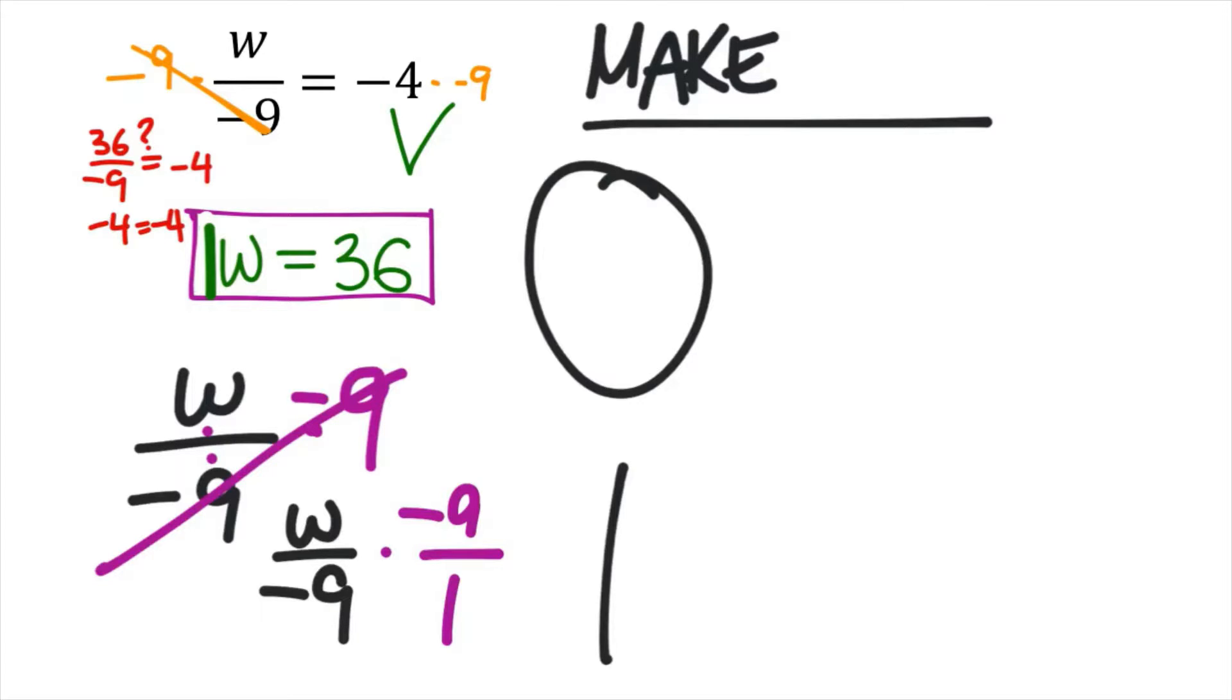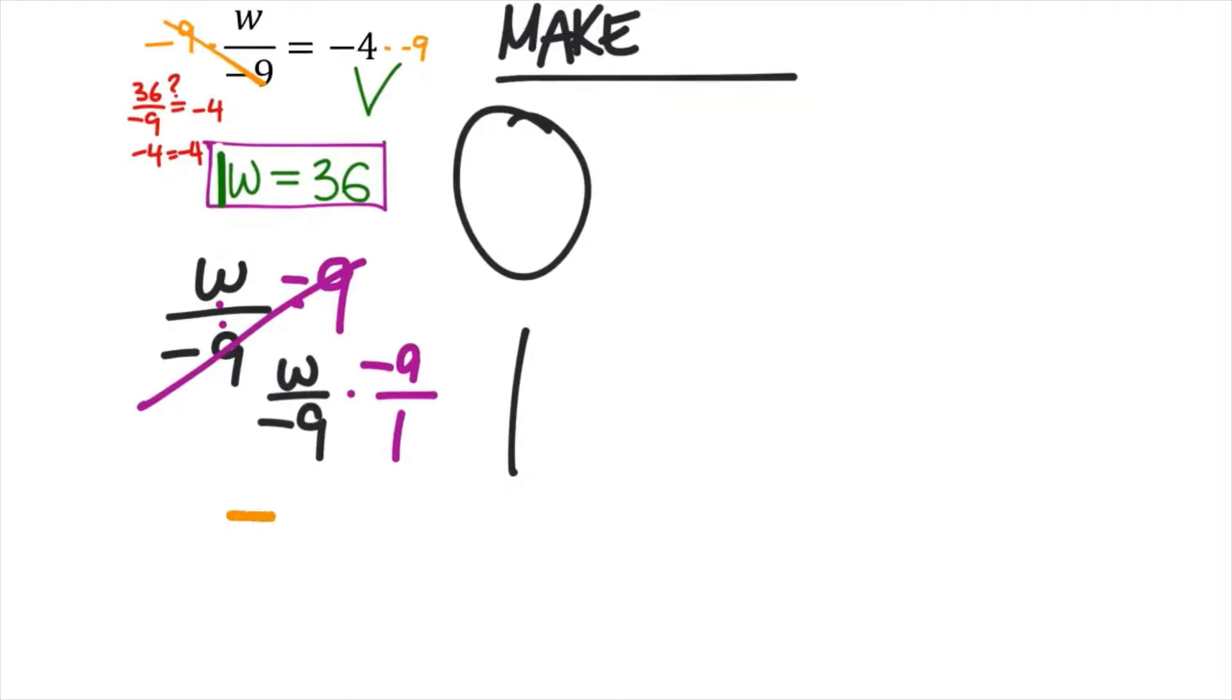Well this multiplied together, I'll give myself more space here, would be the same as negative nine w, that's the numerators multiplied together, and the denominators multiplied together is also negative nine.